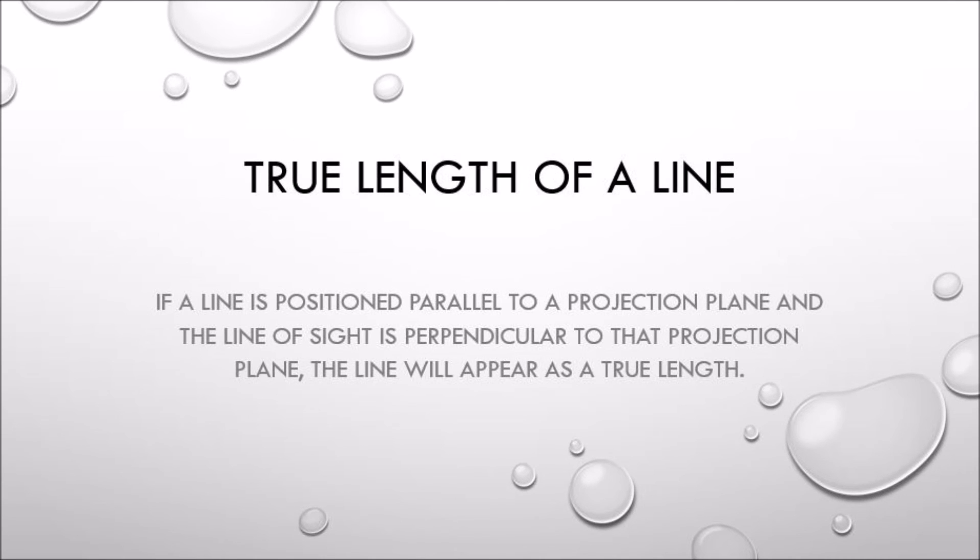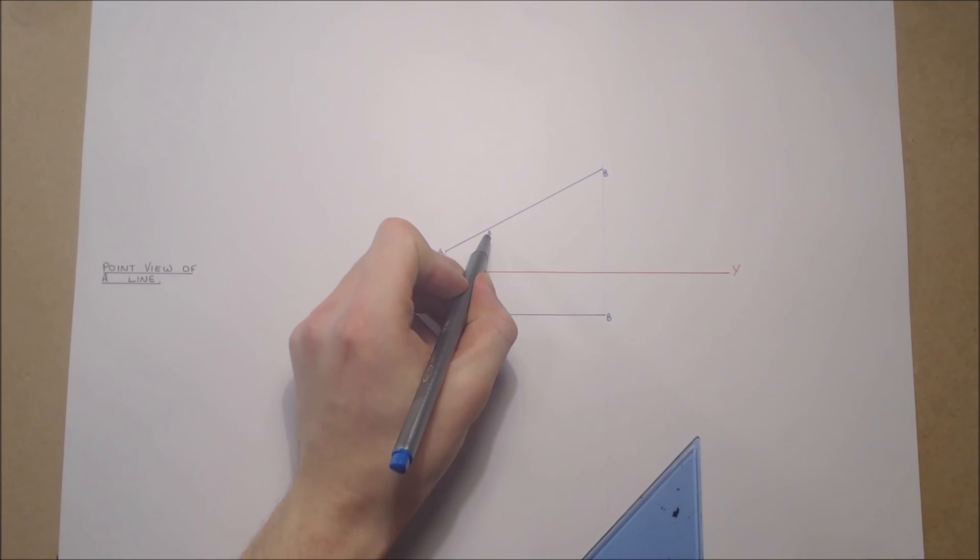Firstly, we must determine the true length of a line. If a line is positioned parallel to a projection plane, and the line of sight is perpendicular to that projection plane, the line will appear as a true length.